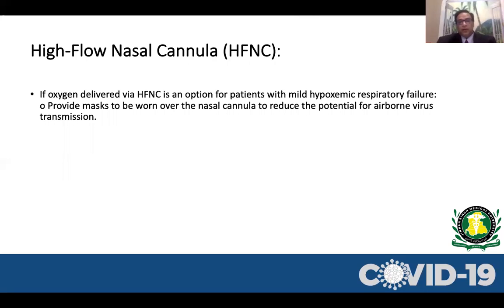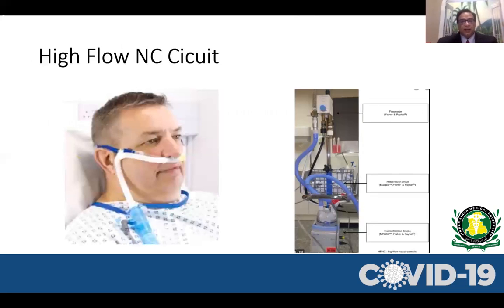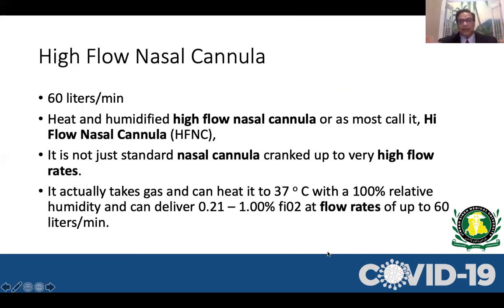If the patient is not doing well on standard oxygen, high-flow nasal cannula is an option. There was initial concern about aerosolization with HFNC, so we suggest placing a mask over the nasal cannula to minimize it. The high-flow nasal cannula is not like a regular nasal cannula — it has a flow meter, tubing, and humidifier that heats gas to 37°C with 100% relative humidity, and can deliver oxygen from 21% to 100% at flow rates up to 60 liters per minute.